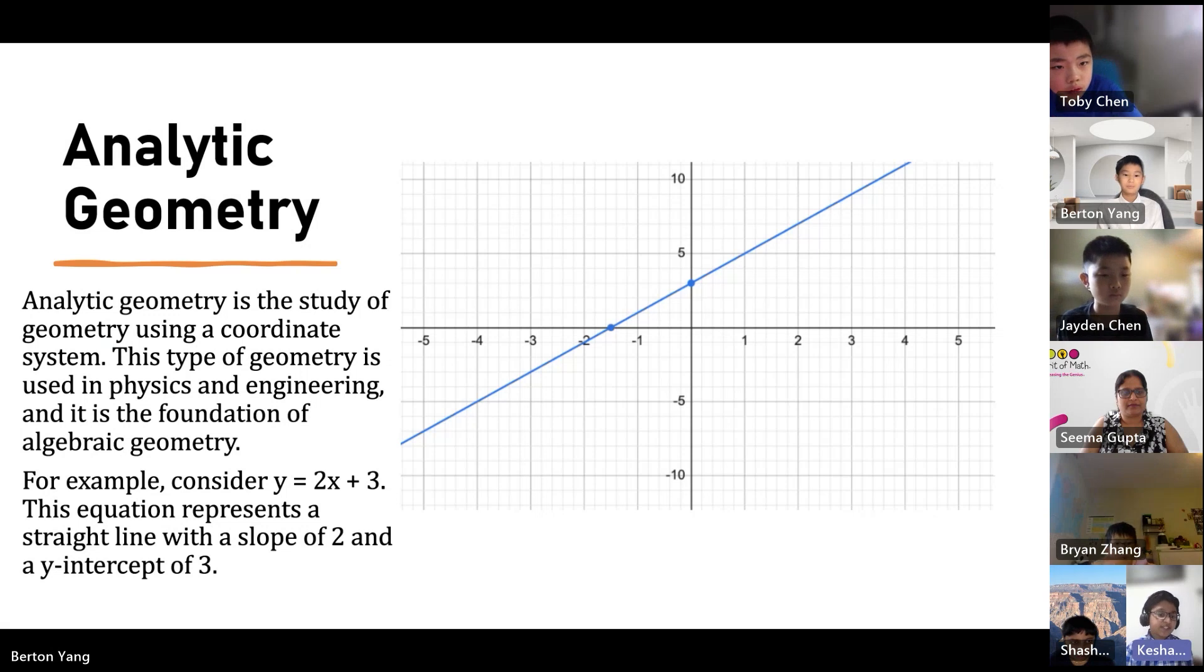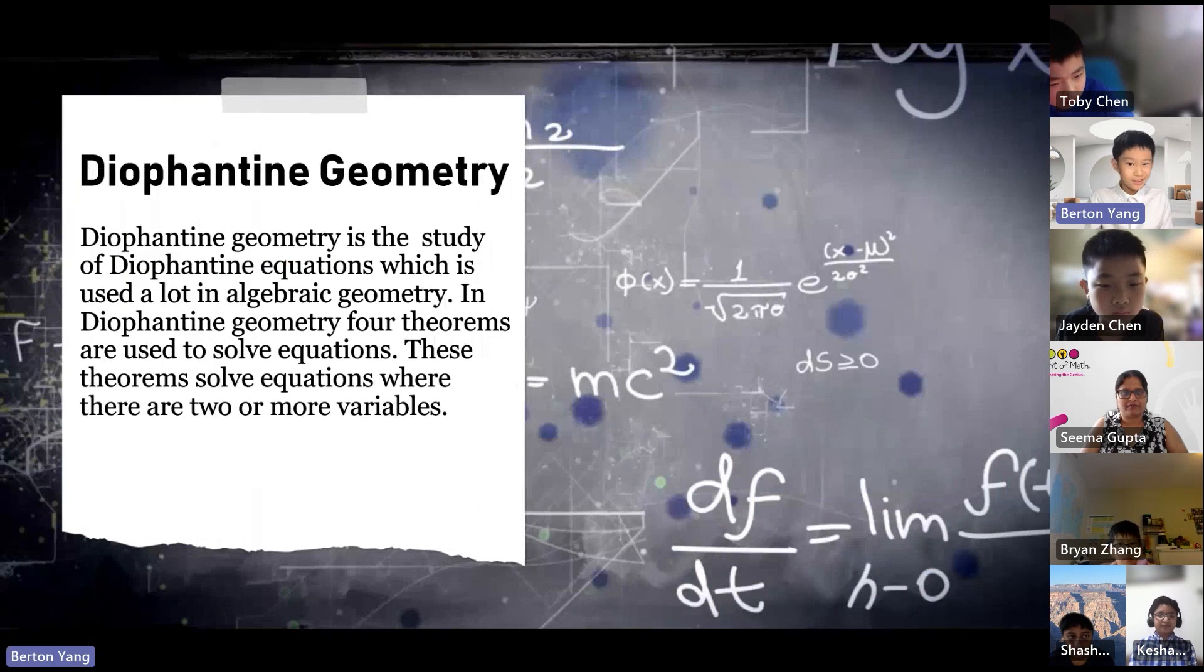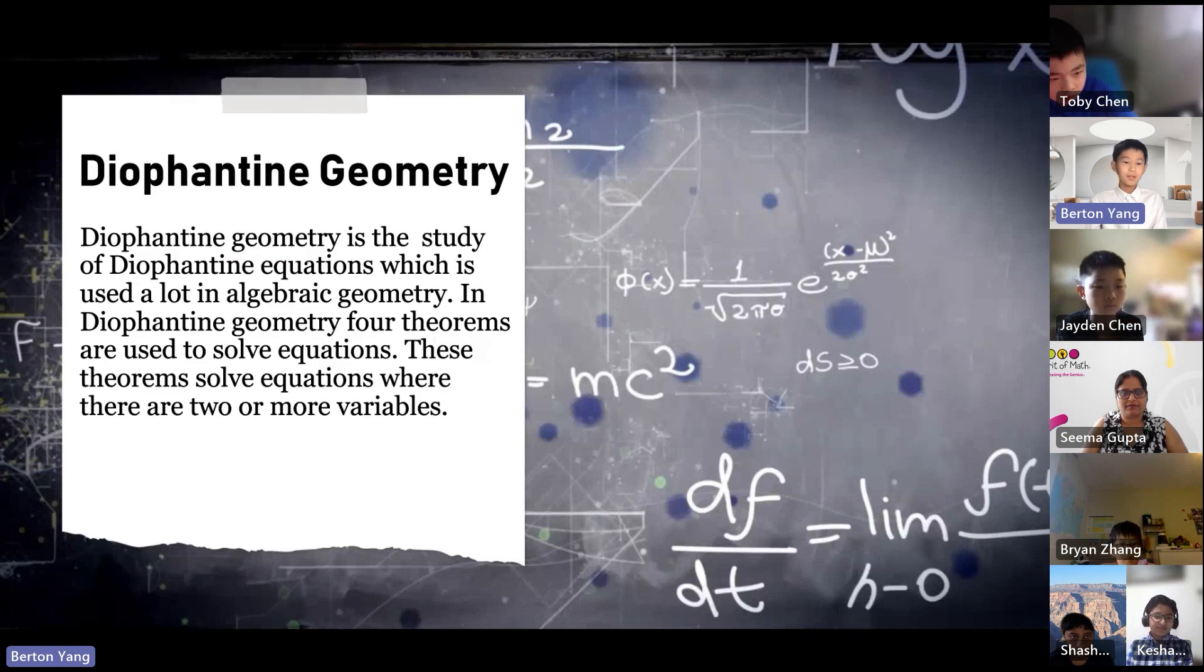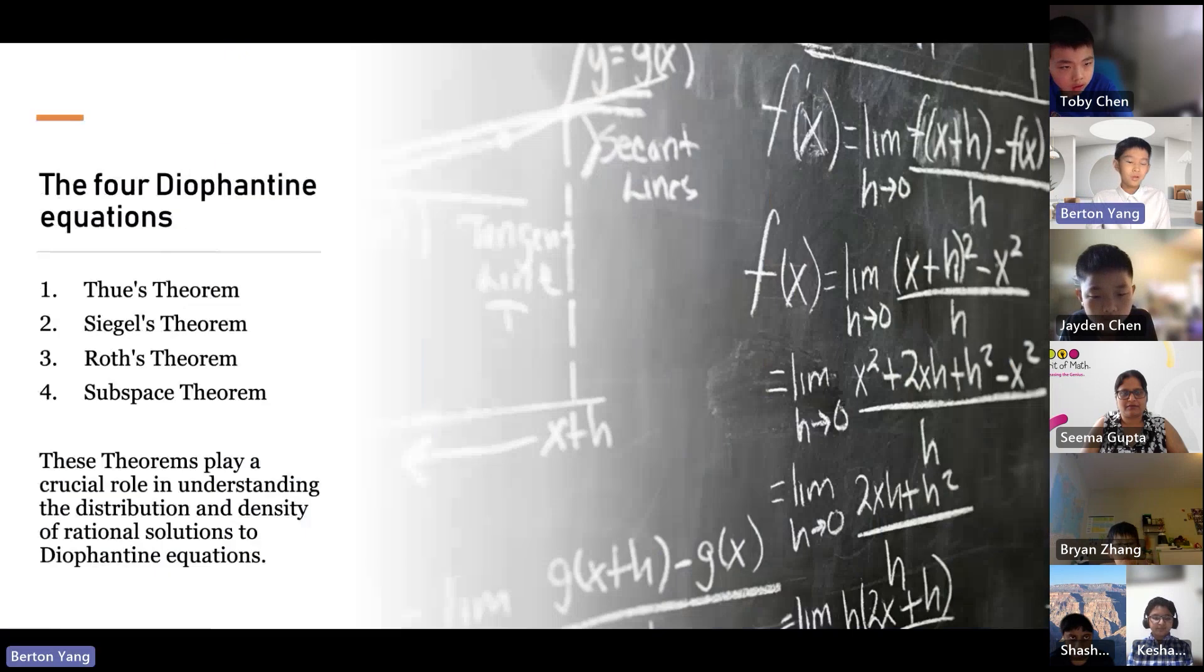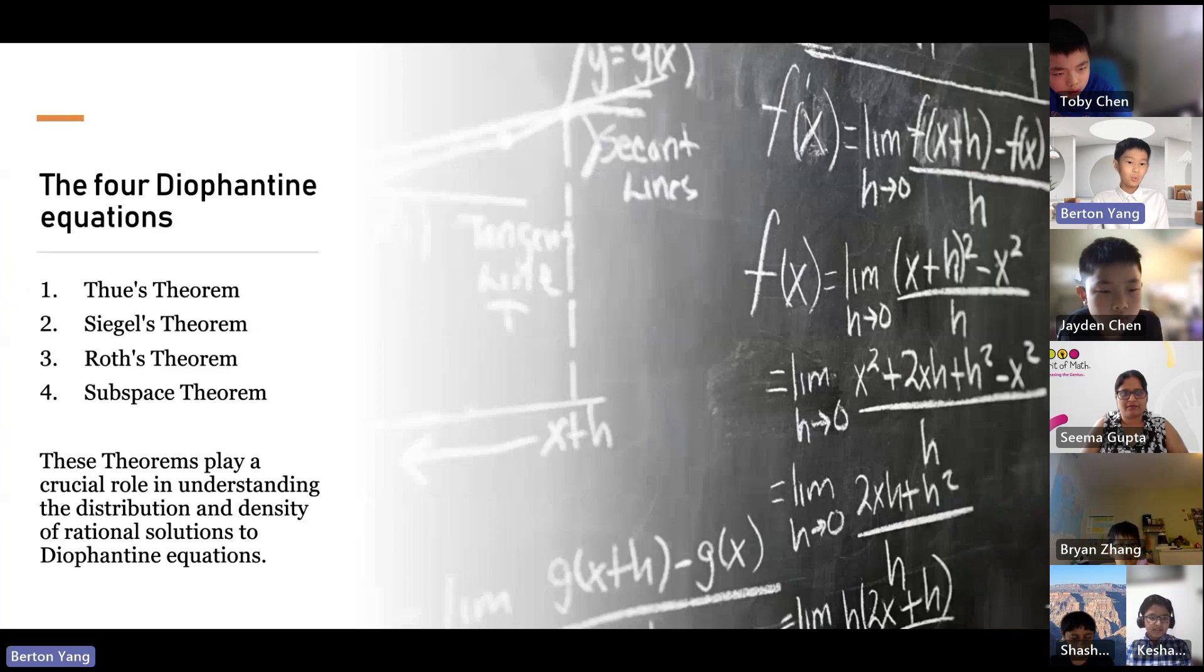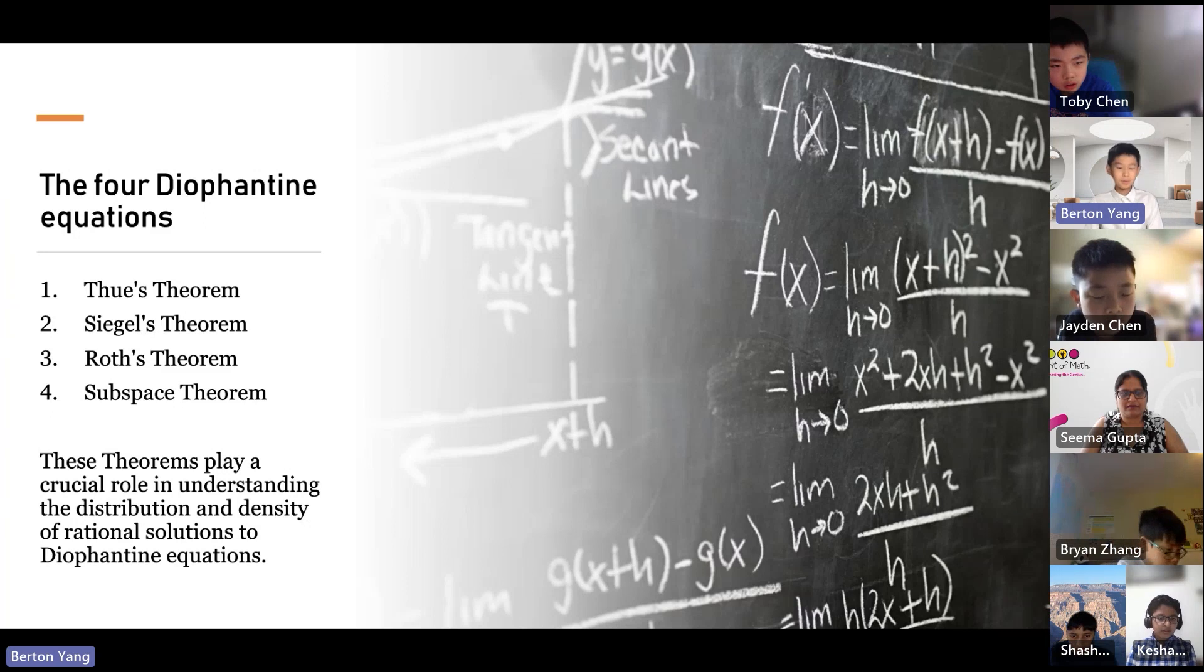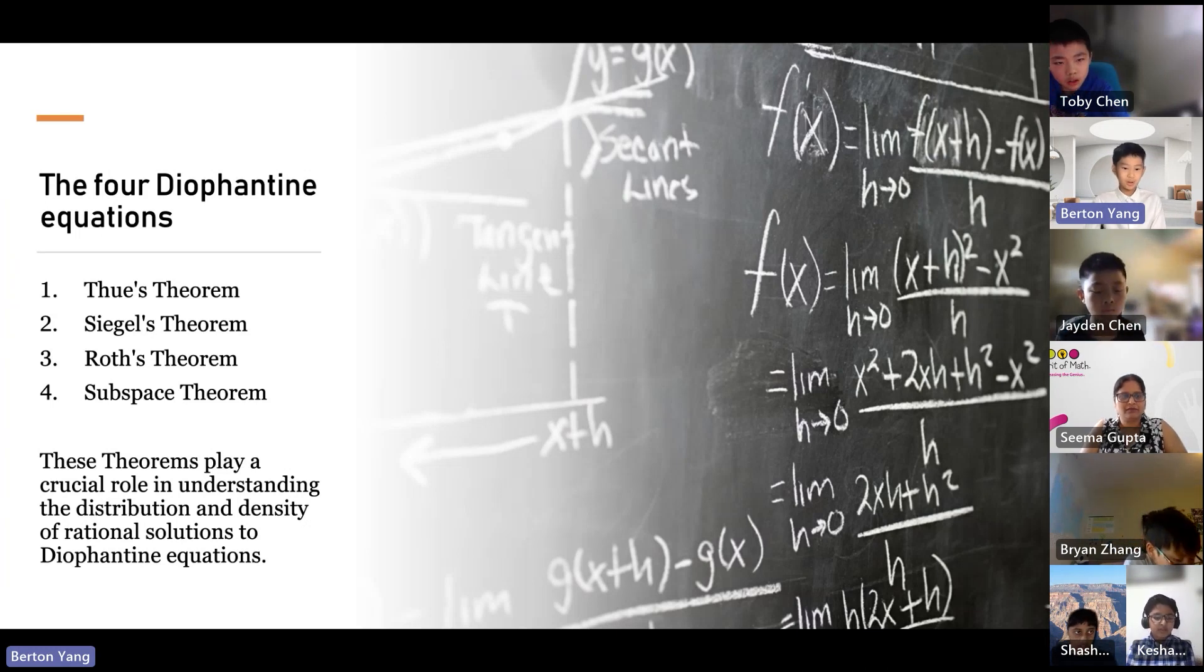Diophantine geometry. Diophantine geometry is the study of Diophantine equations, which is used a lot in algebraic geometry. In Diophantine geometry, four theorems are used to solve equations. These theorems solve equations where there are two or more variables. The four Diophantine equations. Thue's theorem, Siegel's theorem, Roth's theorem, and subspace theorem. You can research these in your free time because these theorems are pretty complicated. These theorems play a crucial role in understanding the distribution and density of rational solutions to Diophantine equations.